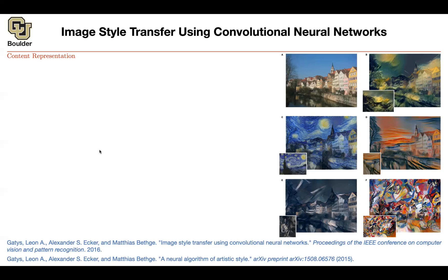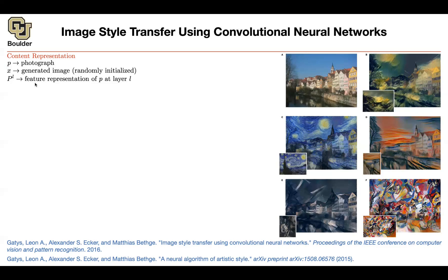First of all, you need to preserve the content. You want whatever comes out of your algorithm to preserve the content of your original image. Let's say you have a photograph — you want to generate an image, and initially it is randomly initialized. It's a noise image, and X is basically what you want to output. P is the photograph that you have. You push your photograph through a neural network, and in this case the neural network is pre-trained and fixed — pre-trained on ImageNet. It could be VGG16, and then you stop at one particular layer, L.